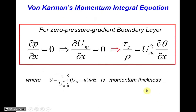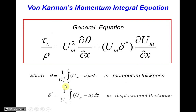The momentum integral equation was derived for zero pressure gradient boundary layer, where dp/dx = 0 and dU_M/dx = 0. The momentum thickness expression is as derived at the beginning of the lecture. In the general case where pressure can change along the plate, an additional term involving displacement thickness and the streamwise change of external flow velocity appears in the equation. For example, driving through terrain with changing wind means the external flow velocity varies, and this must be accounted for when computing drag on the body.